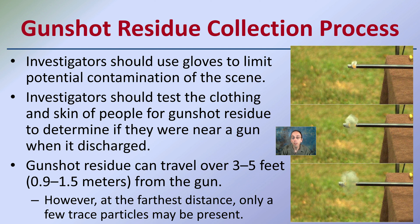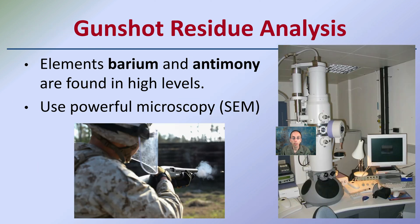Gunshot residue can travel about three to five feet from the gun, or about one to one and a half meters. However, at those outer ranges only very few trace particles might be present, making them very hard to find. That's why it's important to try to pinpoint where the gun was actually fired.